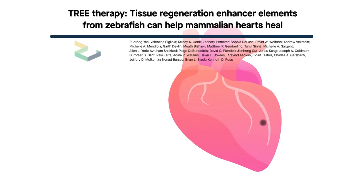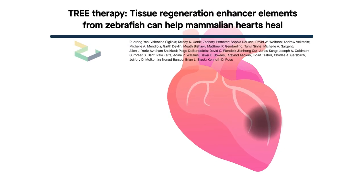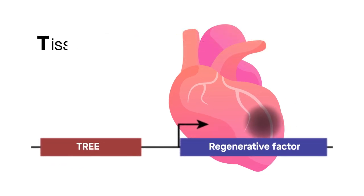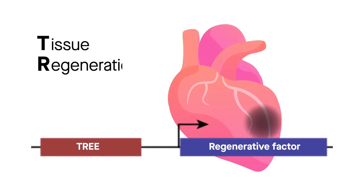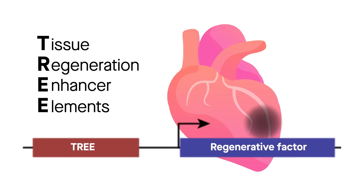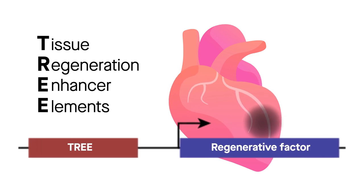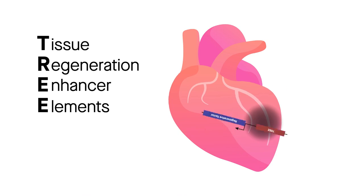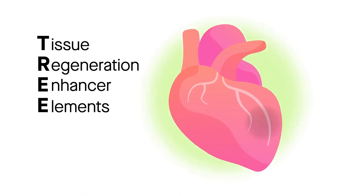How do you fix a broken heart? According to a new study, trees can help — that is, tissue regeneration enhancer elements. The study found that these short DNA control modules from zebrafish can precisely regulate gene expression in mammals to promote healing after a heart attack.